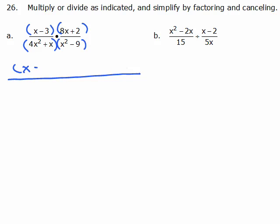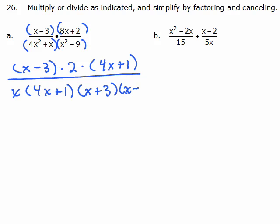x minus 3 can't do anything more with that. But out of 8x plus 2 you could take a 2 out. So that's a factor. And 4x plus 1. Out of the denominator you could factor out an x and that gives you 4x plus 1. And x squared minus 9 is the difference of 2 squares, x plus 3 and x minus 3. So you have to go through all that and now I'll see if there's some common factors.